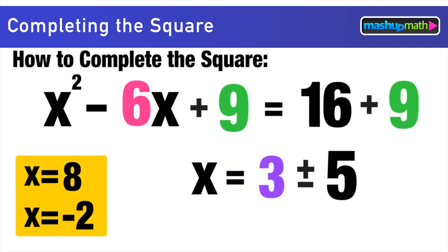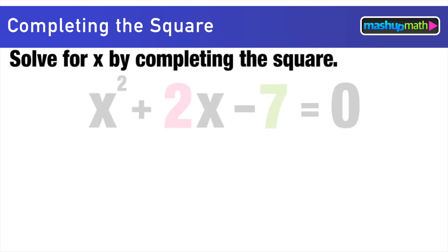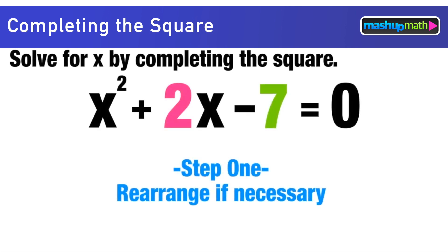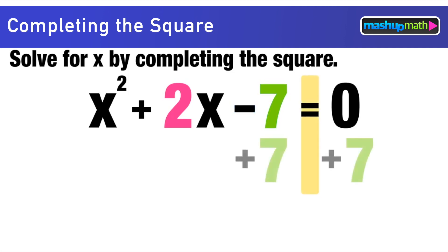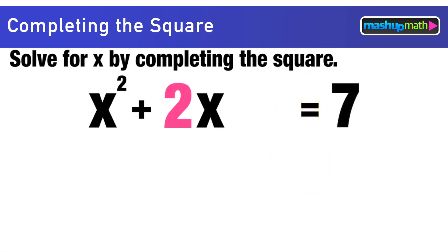What's really cool about completing the square is that this method applies to solving any quadratic equation. For our first advanced example, we solve x² + 2x - 7 = 0. Step one: rearrange so all constants are on the right. Move the -7 to the other side, giving x² + 2x = 7.